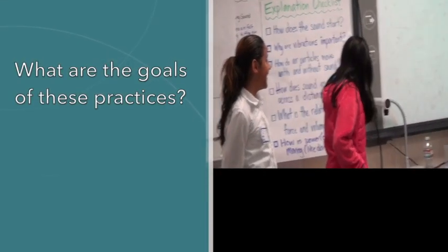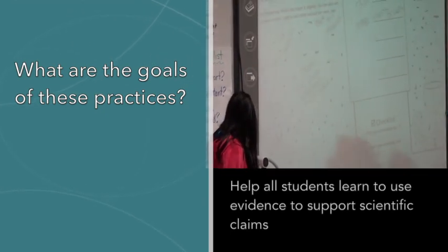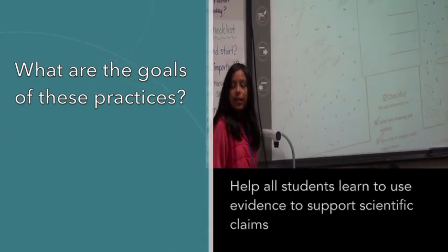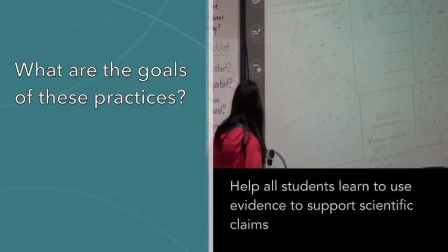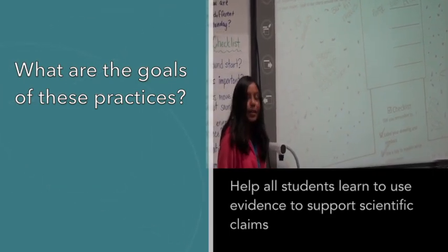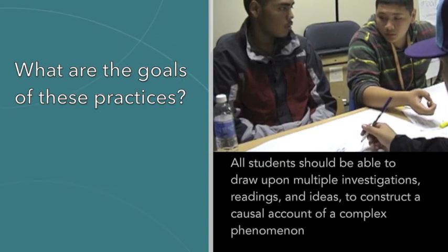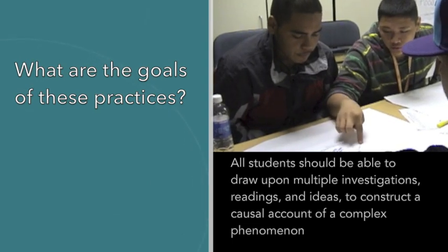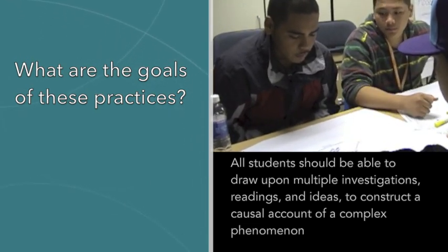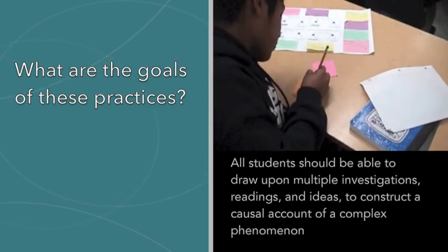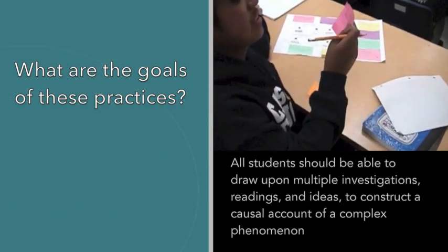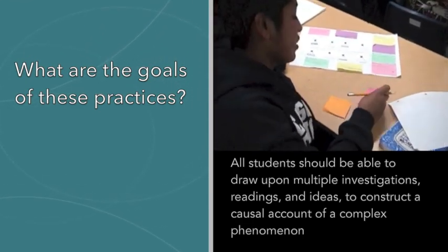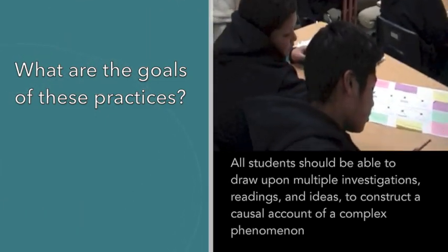One goal of these practices is to help all students learn to use evidence to support scientific claims. A claim is an informed statement about what is or is not causing some part of a phenomena to unfold in a particular way. Another goal is for all students to be able to draw upon multiple investigations, readings, and ideas to construct a causal account of some important natural phenomena. We stress that students must look at many forms of data and information because the expectations for their final models and explanations require detail, elaboration, and coherence with evidence.